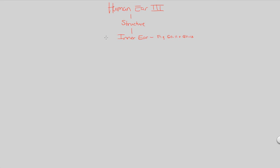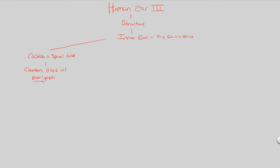The inner ear — we left off in the previous video by stating that the oval window transmits these vibrations to the cochlea. The cochlea is going to be the portion of the inner ear that we're focusing on. It is the spiral tube seen in figure 50.10 and also 50.12. It's going to be a chamber-like structure with several chambers within it, and these chambers will be filled with something called perilymph — just a fluid. The cochlea specifically contains three subparts to know about.